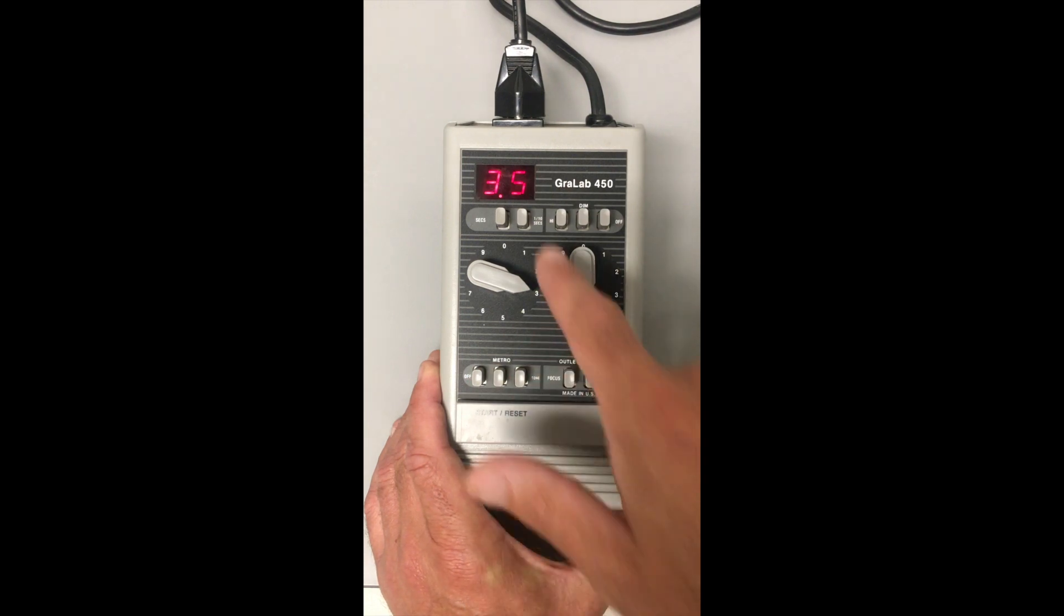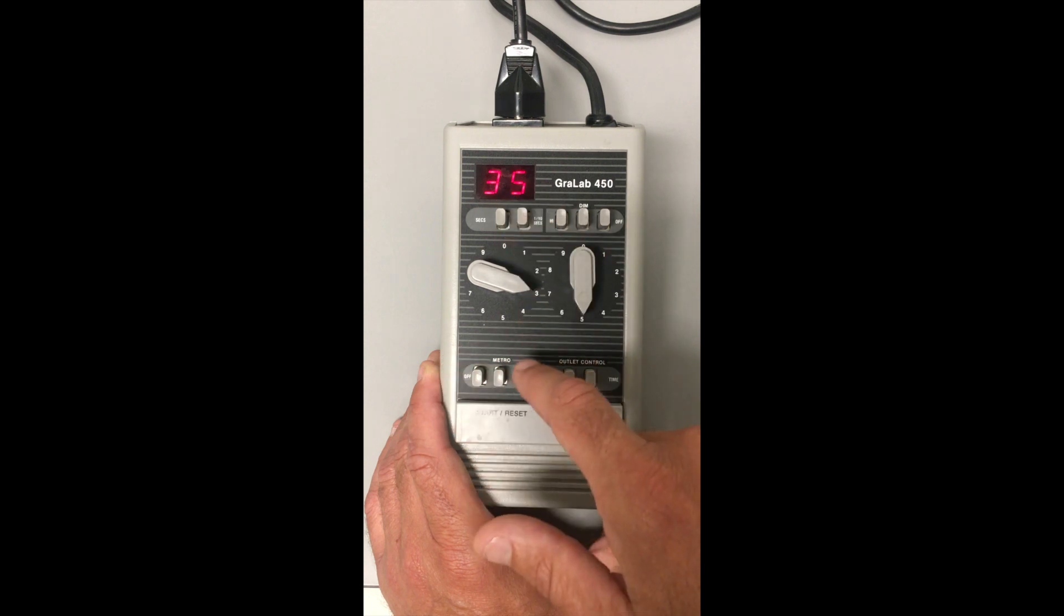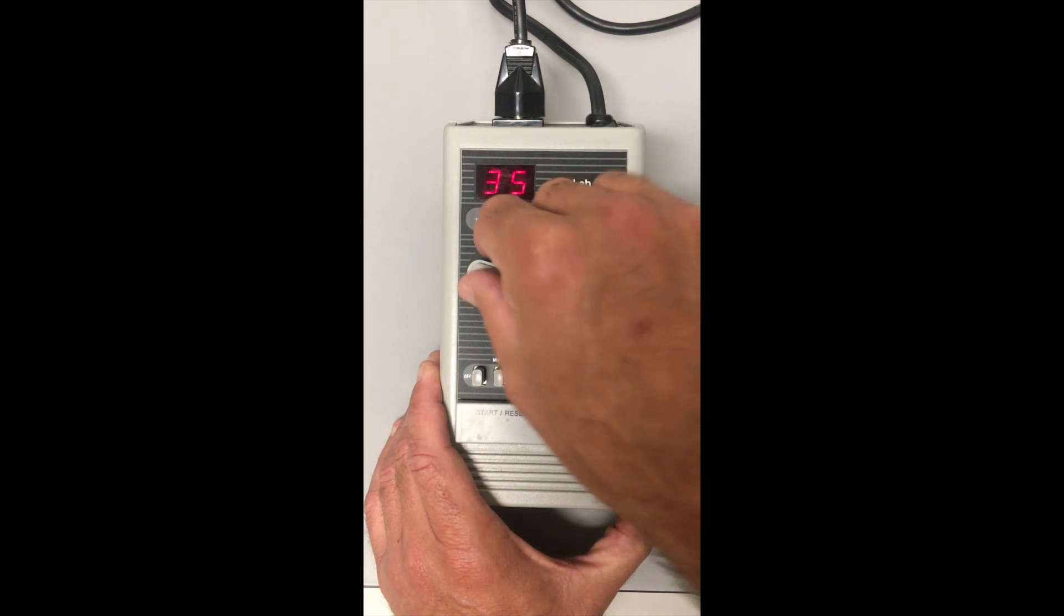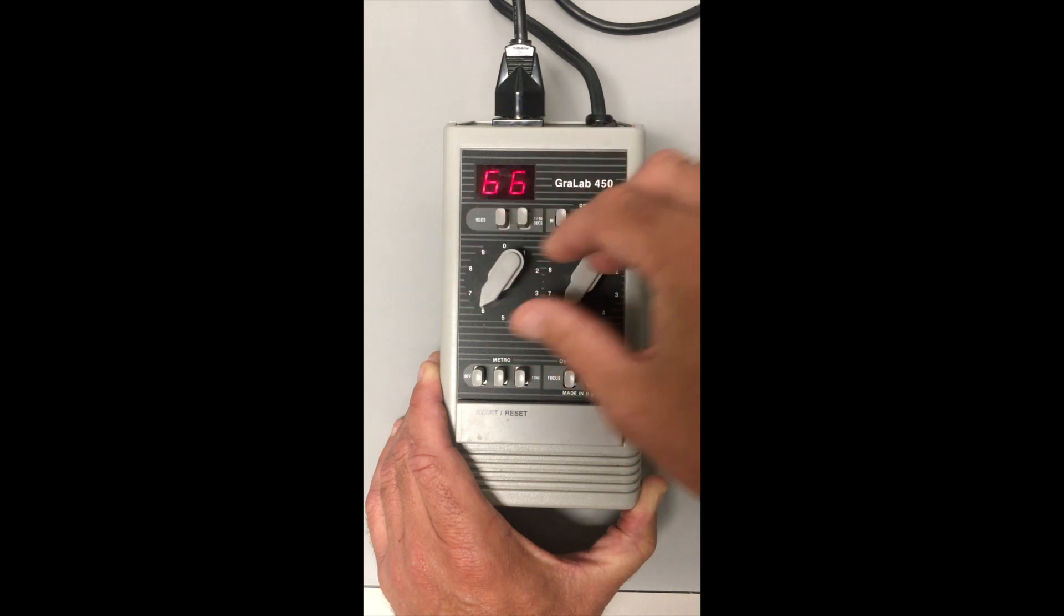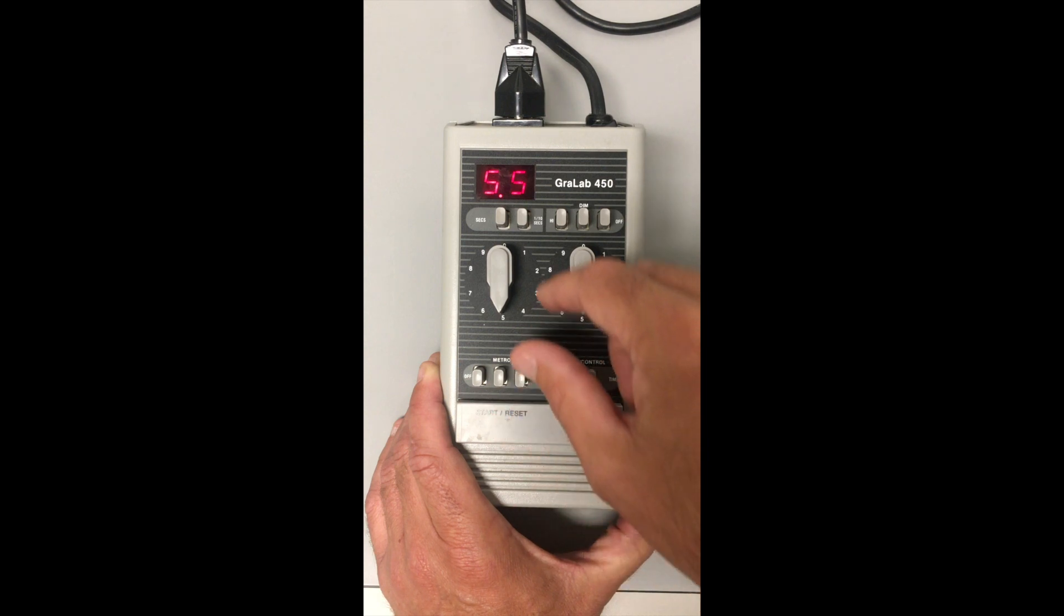If I switch this button now over to seconds, it removes the decimal point and I've gone from three and a half seconds to 35 seconds. So this is for if you need really long exposures - I can go all the way up to 99 seconds for that exposure. I don't want to expose for that long because it'll make the video last forever, so I'm going to change it back down to tenths of a second.